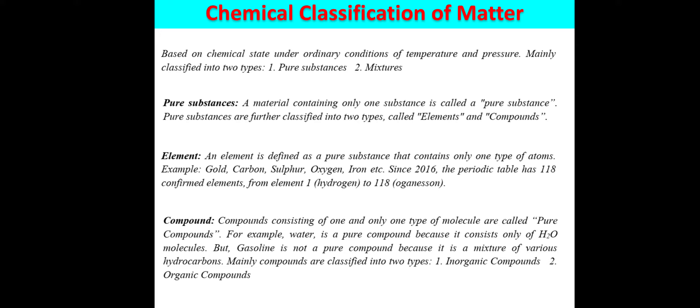Now we come to compounds. Compounds consisting of only one type of molecule are called pure compounds. For example, water is a pure compound because it consists only of water molecules, H₂O. The formula of water is H₂O, so there is no impurity — only pure H₂O molecules in water.